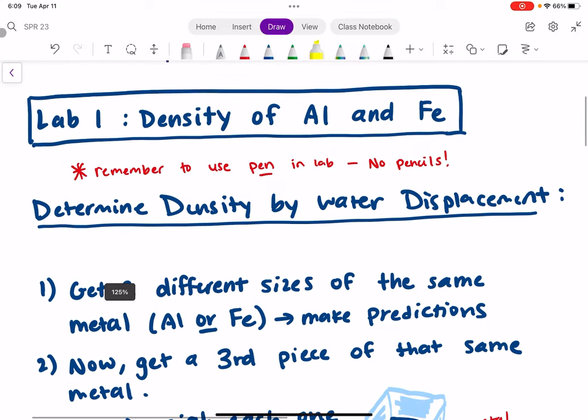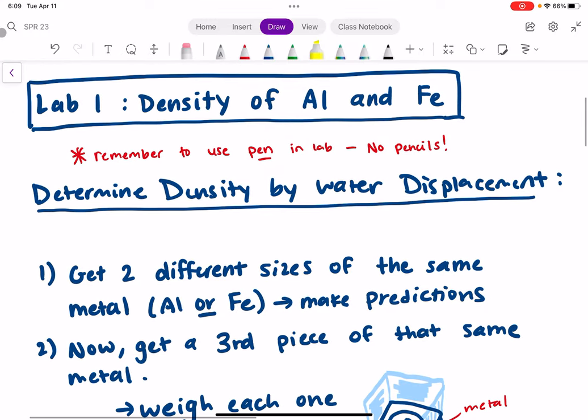So let's see what we're actually doing in lab. For lab one, remember that you need to use pen in lab, in all your labs, not just for lab one. In your lab notebook, there should only be pen, no pencil.